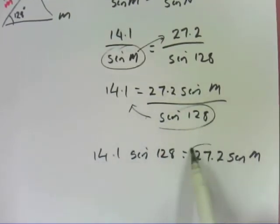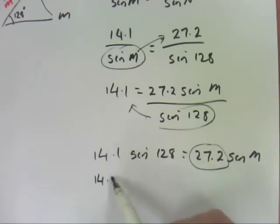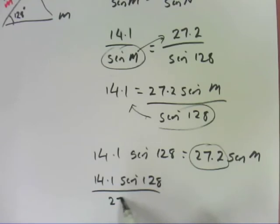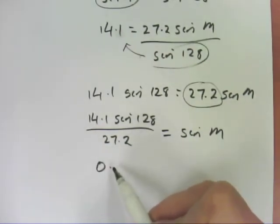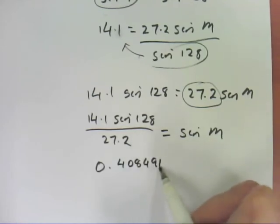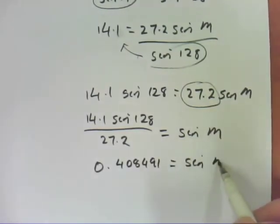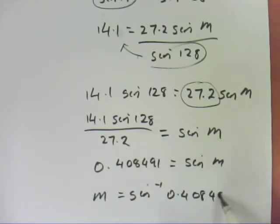Then I'm going to multiply that over there. So 14.1 sine 128 equals 27.2 sine M. Then I'm going to divide by 27.2. So 14.1 sine 128 divided by 27.2 equals sine M. So if I calculate this now, I get 0.408491 equals sine M.